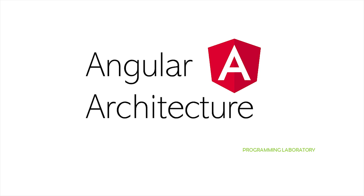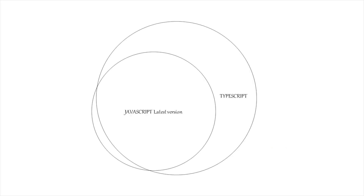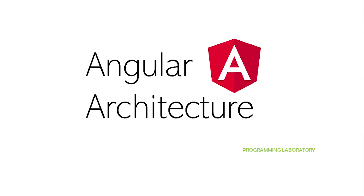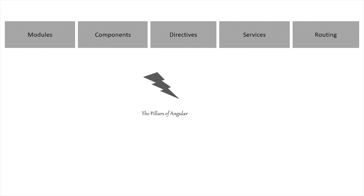In this video I'm going to discuss the core architecture of the Angular platform. Angular is a framework built for single page client applications and it uses HTML and TypeScript. TypeScript is a superset of JavaScript with extra features on top. Angular architecture is built with five fundamental powerful concepts: modules, components, directives, services, and routing. I'm going to discuss how they're glued together to build this powerful architecture.